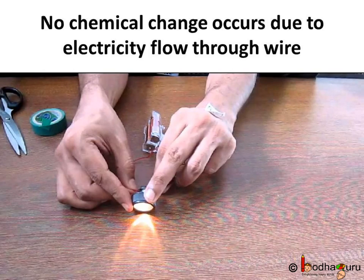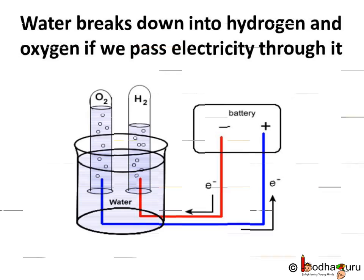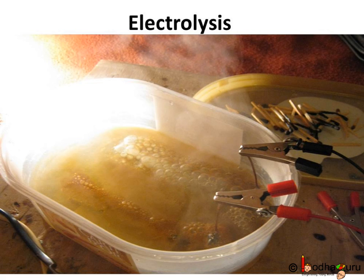We don't see such chemical changes when metal carries the electricity. Wire just gets hot with time because of the heating effect, but there is no chemical change. In 1800, William Nicholson showed that if we pass electricity through water, bubbles of oxygen and hydrogen are produced. Water molecule is made of oxygen and hydrogen, so water molecule breaks down into hydrogen and oxygen. Not only water, molecules of other electrolytes are also broken down while we pass electricity through them.